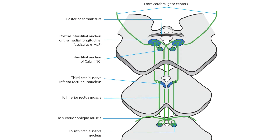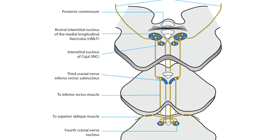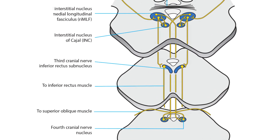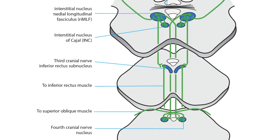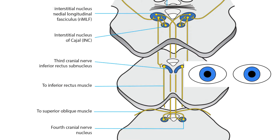For downward eye movement, the signal takes a different brainstem path. It goes ventrally through the tegmental midbrain to the inferior rectus and superior oblique nuclei. Those nuclei send the signal out to the superior oblique and inferior rectus muscles to move the eyes downward.